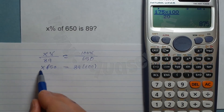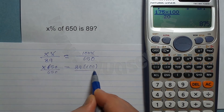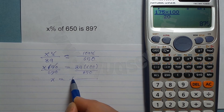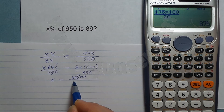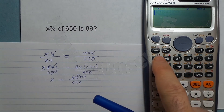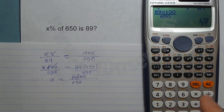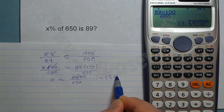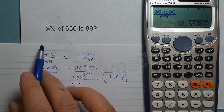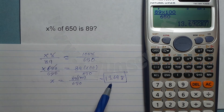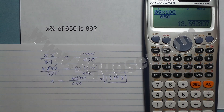To isolate X, divide both sides by 650 — the 650s cancel — leaving X equals 89 times 100 divided by 650. Using the calculator: type 89 times 100, press the arrow down, then 650, and press the fraction button. The result is 13.69. So X percent was 13.69 — about 13.7% of 650 is 89. This was a tutorial from Equazor.com, thank you for your attention.